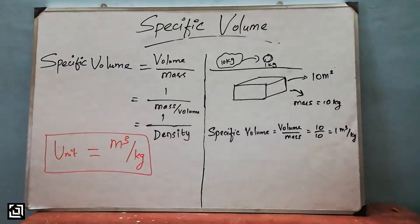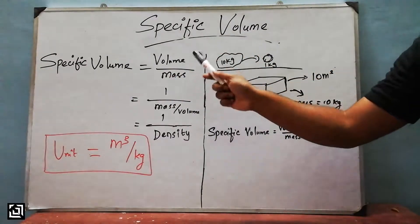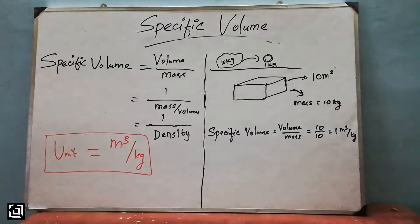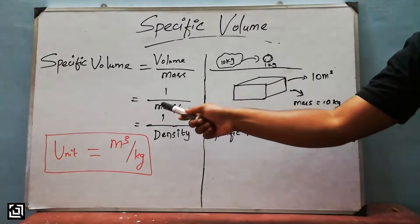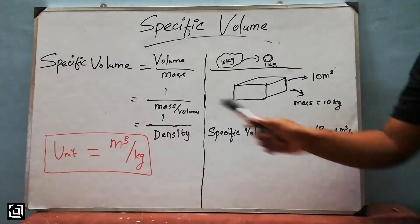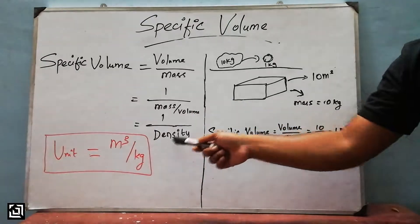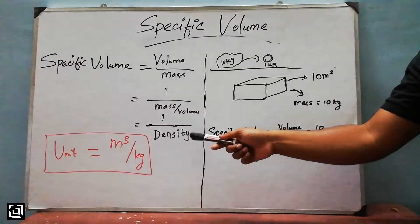Now, we will talk about specific volume. Specific volume equals volume divided by mass. It equals 1 divided by mass by volume. Mass by volume equals density.